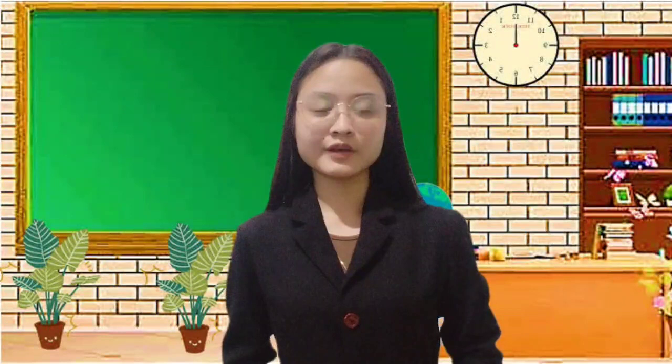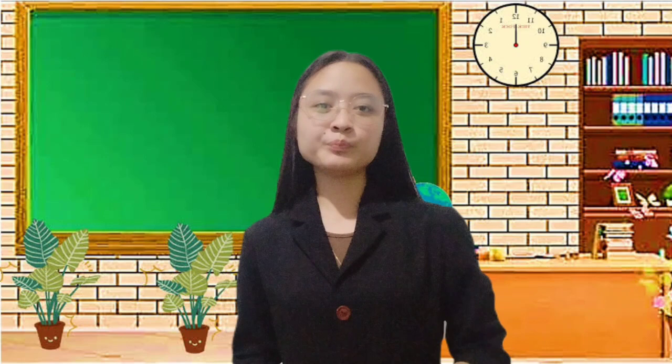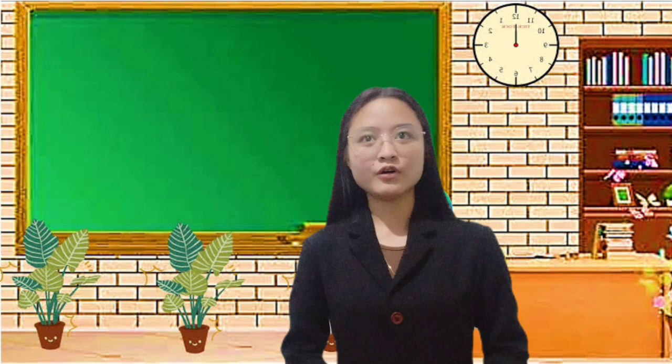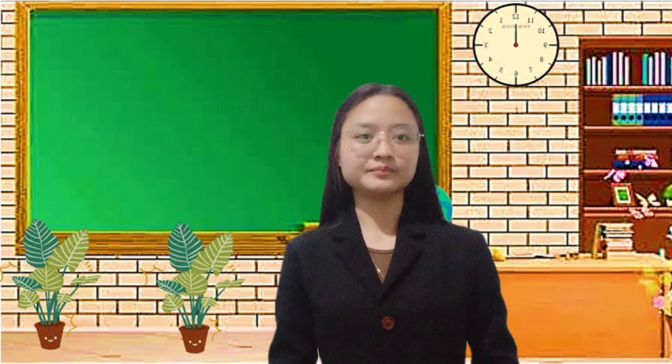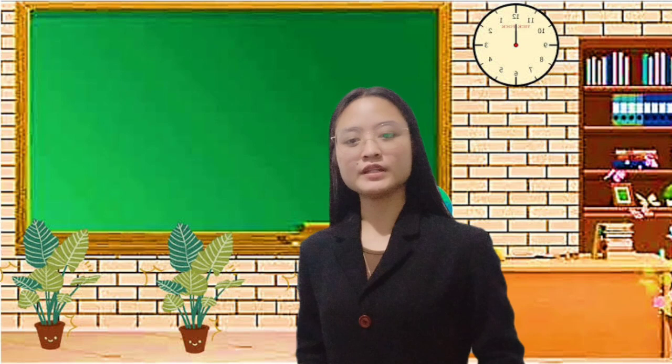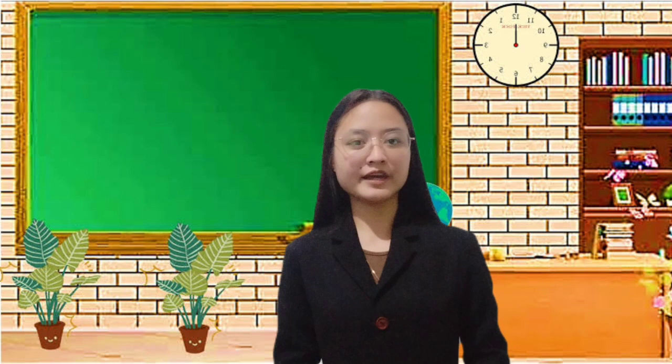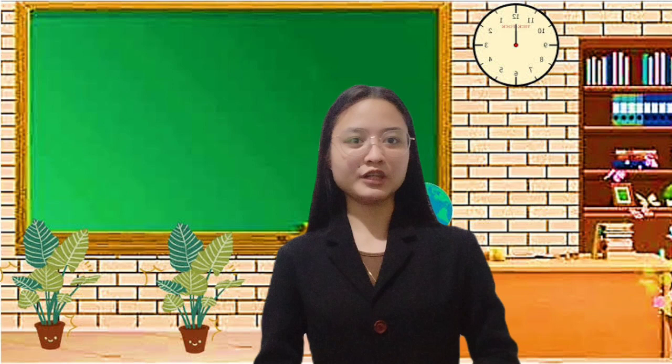To sum up, we will have another activity. I will group you into two. I will give you an envelope. Each envelope contains jigsaw puzzle pieces. Your task is to solve the puzzle and paste it on the board. Are you ready? I will give you 5 minutes to solve it. Okay class, is everyone done? Very good. Everybody, read what's on the puzzle. Group one, can you please read what is on the puzzle? Adding polynomials — in adding polynomials, you just need to combine like terms. How about group two? Subtracting polynomials — in subtracting polynomials, you have to change all the signs of the second term or the subtrahend, and then apply the principle in adding polynomials.